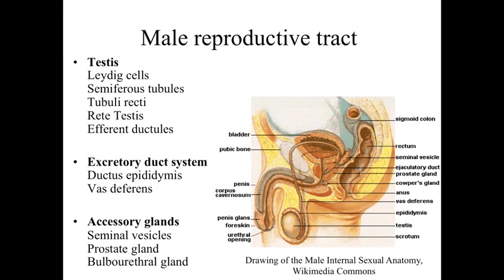We're going to have production of sperm cells, production of testosterone, and then a variety of other structures involved with either the storage or the delivery of the sperm cells during reproduction. We'll have structures within the testes, an excretory duct system for delivering the sperm cells from the testes, as well as a series of accessory glands — the seminal vesicles, the prostate gland, and the bulbourethral glands — which are involved with priming the system and helping to deliver functional spermatozoa into the female reproductive system.